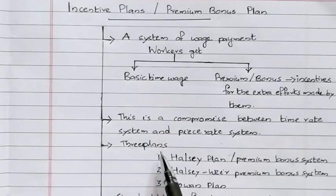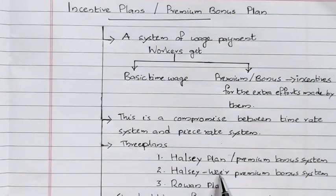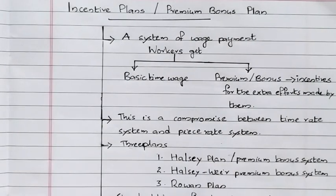In the syllabus, we will discuss three incentive plans. The first is the Halsey Plan, the next is the Halsey Weir Premium Bonus System, and the third is the Rowan Plan.